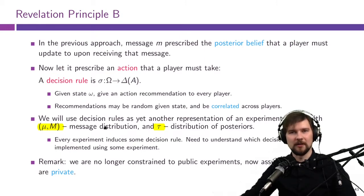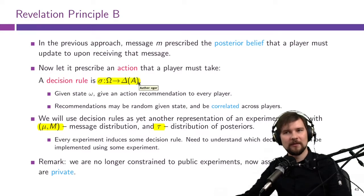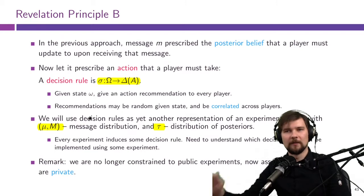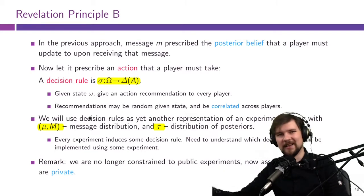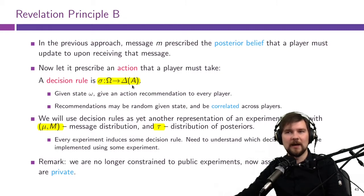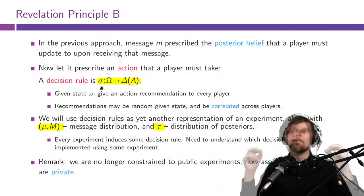Now we're introducing a third representation of an experiment: a decision rule is also an experiment. For any decision rule satisfying constraints similar to incentive compatibility, that decision rule can be generated by some experiment. Conversely — the trivial part — every experiment μ generates some kind of decision rule, producing some distribution over action profiles conditional on the state.